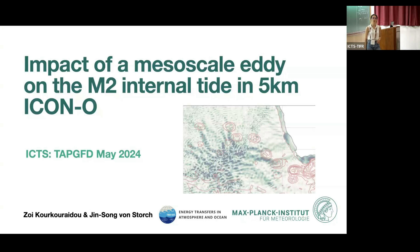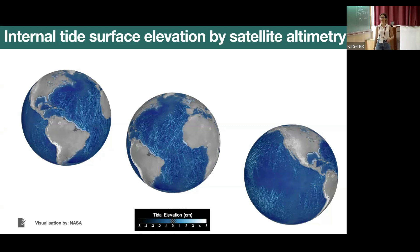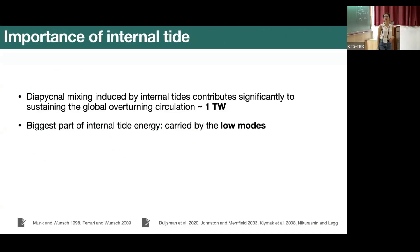First I want to talk about the motivation — why are we interested in this topic. What you see here comes from a visualization by NASA: satellite altimetry showing the internal tide surface elevation at different ocean basins. We can see a significant part in centimeters in almost all ocean basins. We also know from previous research that the diapycnal mixing induced by internal tides contributes significantly to sustaining the global overturning circulation — in fact it was estimated to be around one terawatt of energy.